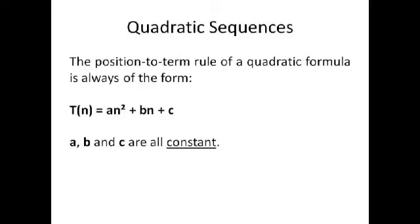The position to term rule of a quadratic formula is always of the form T(n), which basically means the rule in terms of n, equals an² plus bn plus c where a, b and c are all constants. So they're all numbers, probably all different numbers, they could be the same but they're all the same number regardless of what n is.